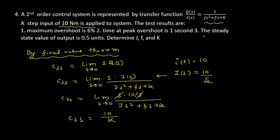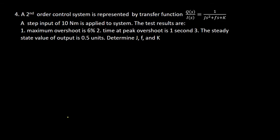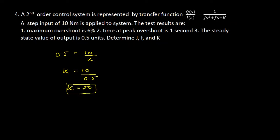It is given that css = 0.5 units. Therefore 0.5 = 10/K, which gives K = 10/0.5 = 20.